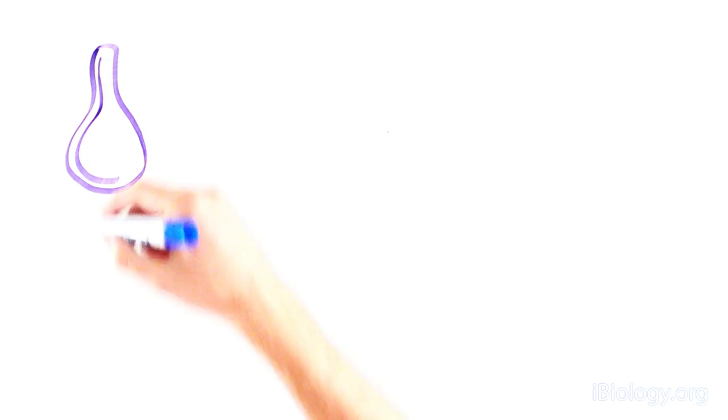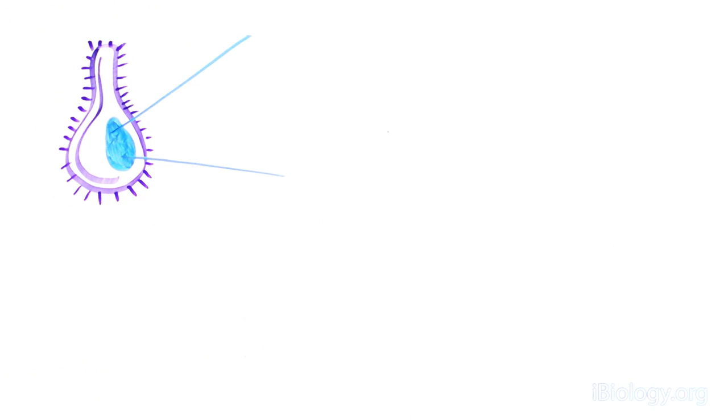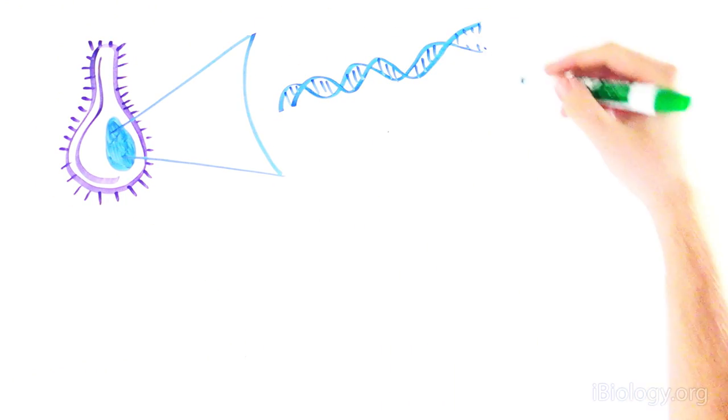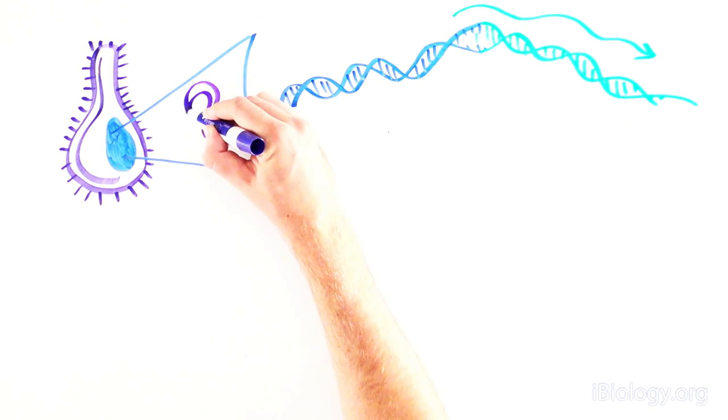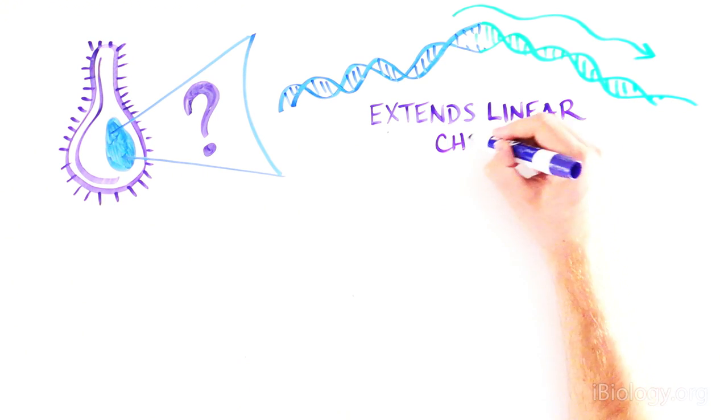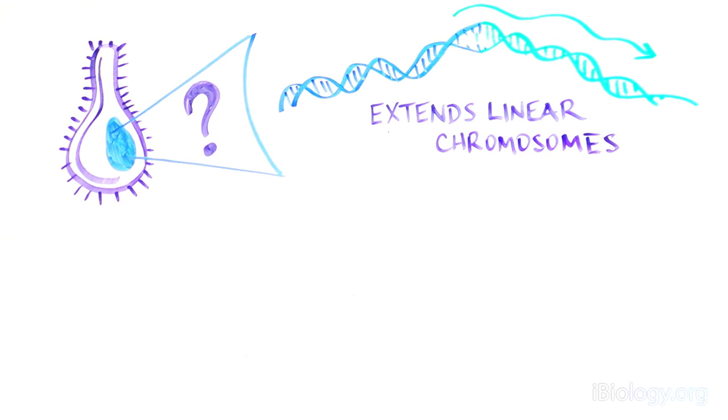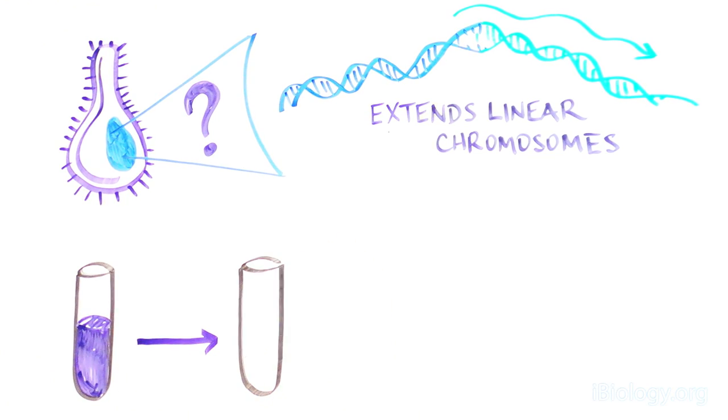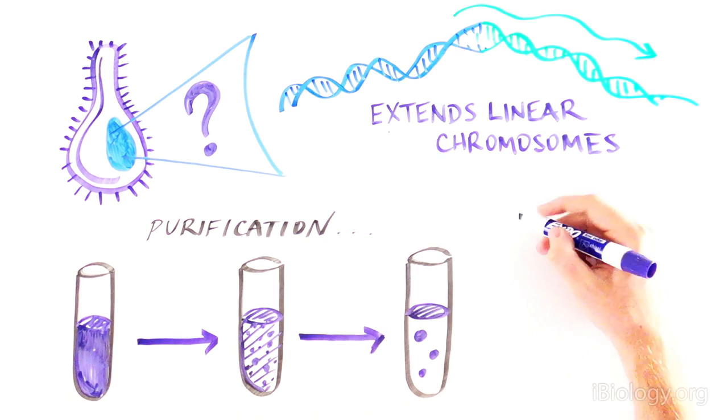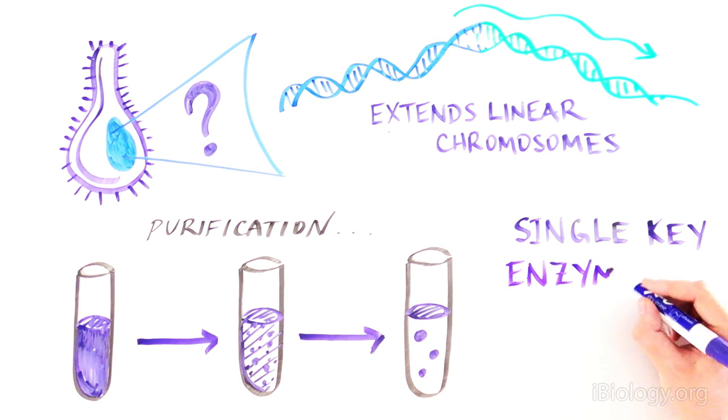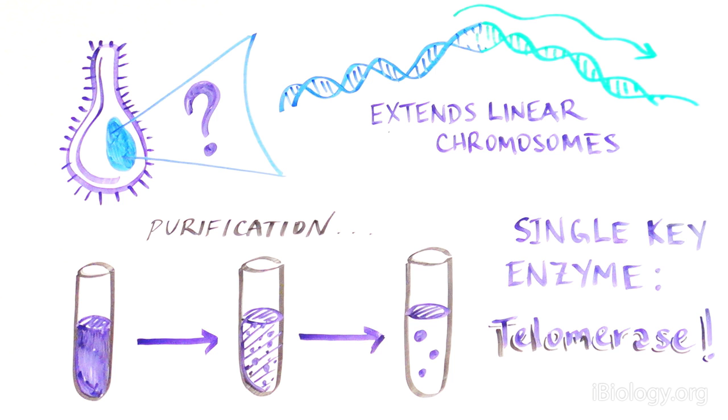So this important experiment conducted almost 30 years ago is the first evidence that there is something in the nucleus that can add a conserved sequence, TTGGGG, and extend linear chromosomes. By doing multiple rounds of biochemical purification, Elizabeth Blackburn and Carol Greider then went on to show that a single key enzyme is responsible for this. They call this enzyme telomerase, since it produces telomeres.